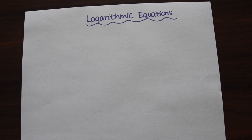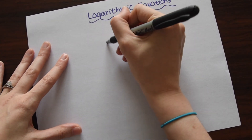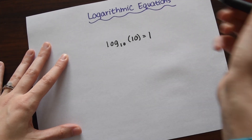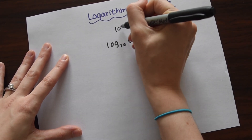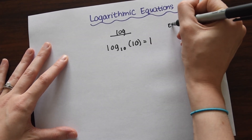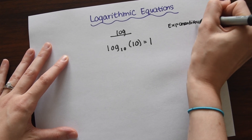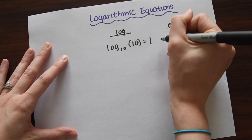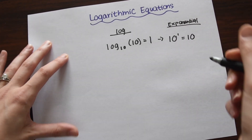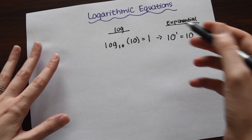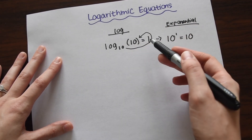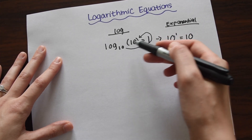So logarithms have a certain notation — they look something like this: log base 10 of 10 equals 1. This is the log notation, but it actually has an equivalent exponential notation. If we were to write this in exponential notation, it would be 10 to the first equals 10. All I'm doing here is rewriting this, and it follows this swooping pattern: 10 to the first equals 10.